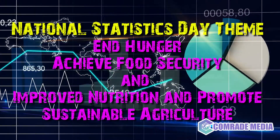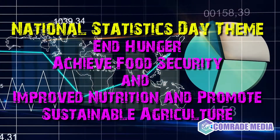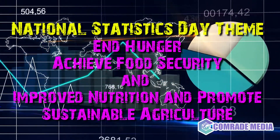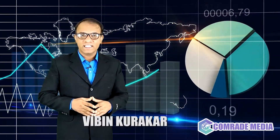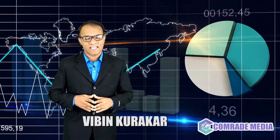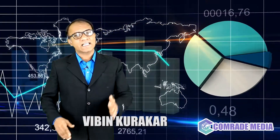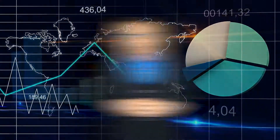The theme for the 2021 National Statistics Day is: 'End Hunger, Achieve Food Security and Improve Nutrition and Promote Sustainable Agriculture.' This theme seeks sustainable solutions to end hunger in all its forms by 2030 and to achieve food security.